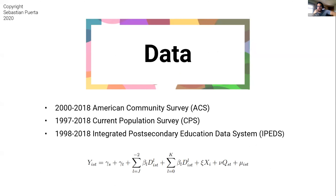The data I use comes from three different sources, and I think this is where the competitive advantage of my project lies and where it adds to the literature on the effects of college in-state tuition policies. I use three different data sources, two of which are microdata and the third is at the college level: the 2000 to 2018 ACS (American Community Survey), the 1997 through 2018 CPS (Current Population Survey), and 1998 through 2018 IPEDS. With this, I have regressions at two different levels: the individual level and the college level.